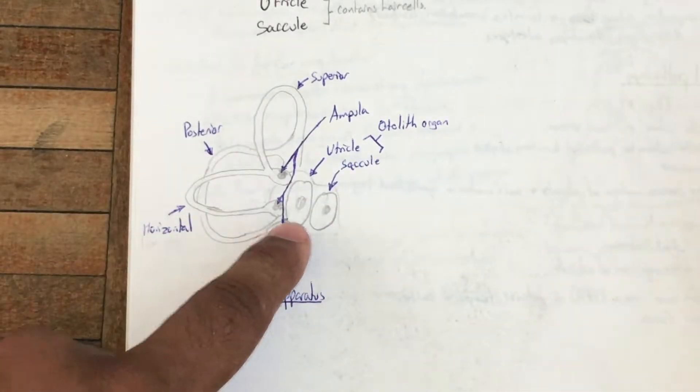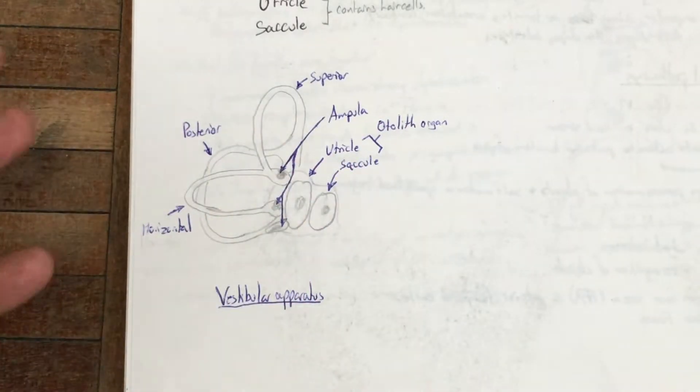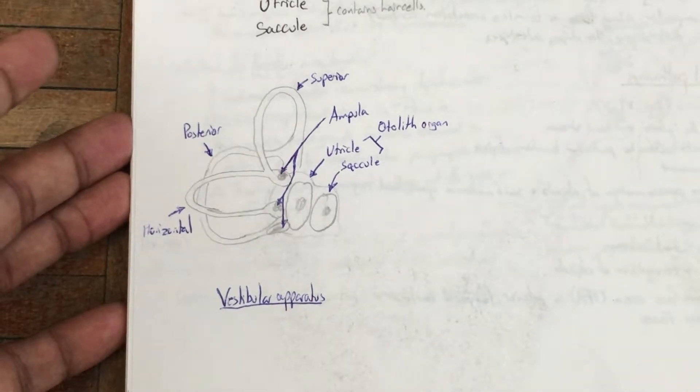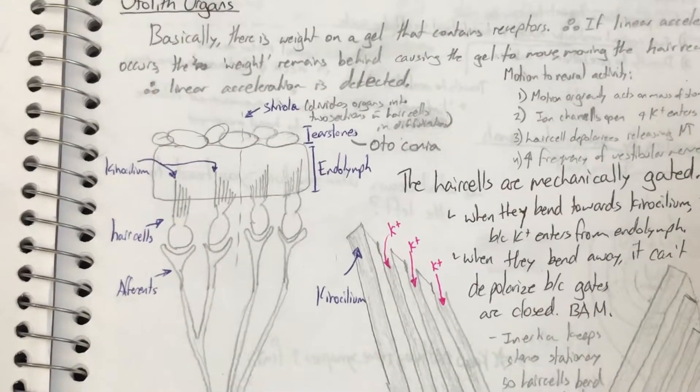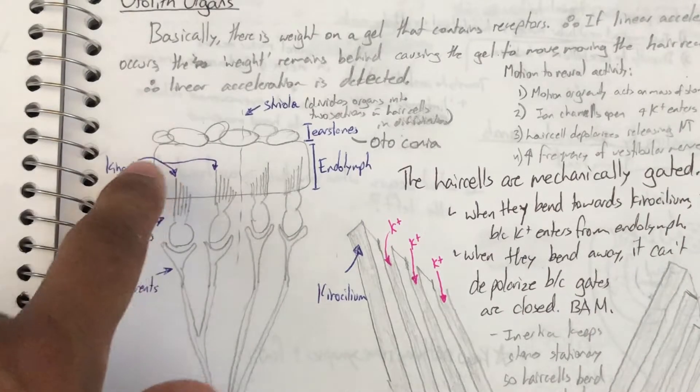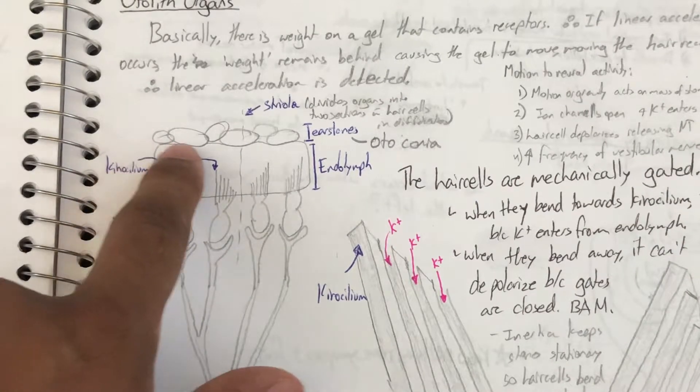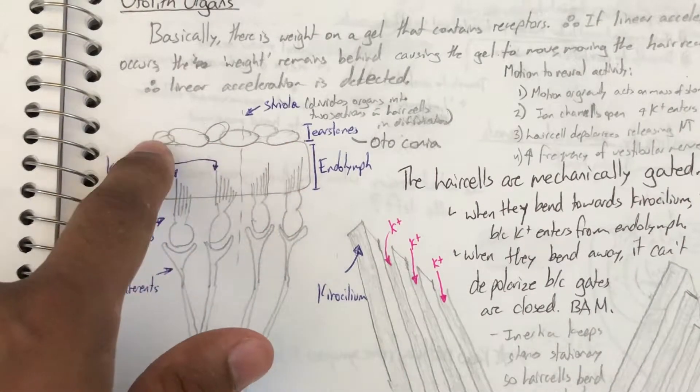Together it gives you an idea of how you're moving in this world. So the otolith organs are a very special structure. You see these crystals on the top, and they're kind of—think of them as like rocks—and this is a gel medium they sit on.